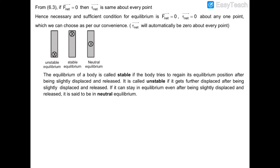This signifies that this position is a stable equilibrium position, in which the system once displaced regains this position again. In neutral equilibrium, if I hinge this rod from the center, then if I displace the rod about the center by a slight angle, this rod will maintain this position — it will neither regain the original position nor go away from it. It will maintain equilibrium in the new displaced position.